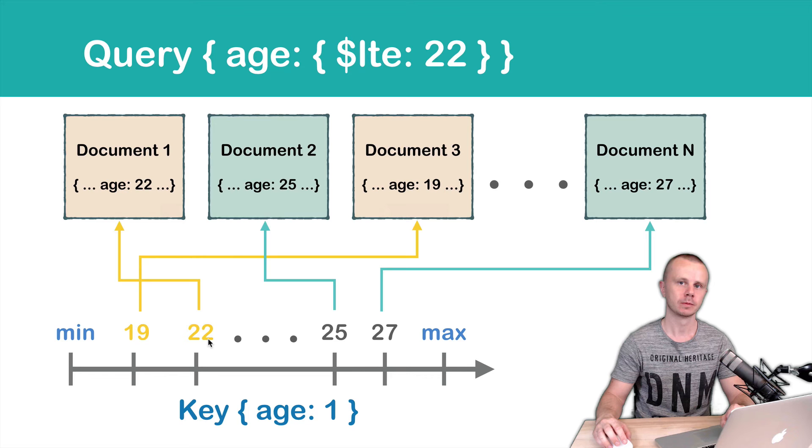We get, in this case, two pointers to the documents, then we retrieve those documents and send them to the client. This means that Document 2 and Document N, for example, are not touched.